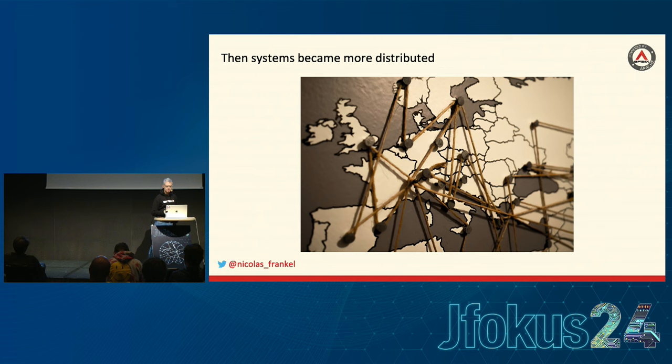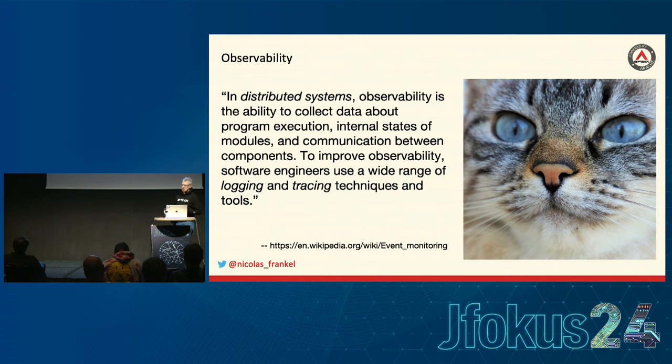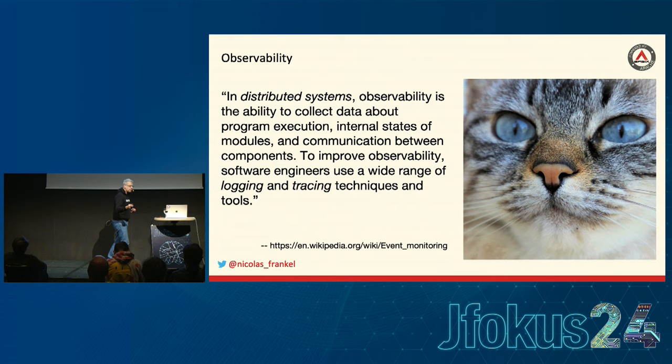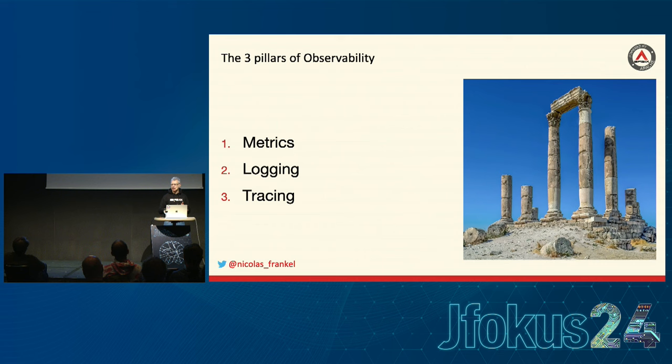Nowadays, a large majority of our systems are distributed. Even if you have a single app and a database, you can see it's the beginning of a distributed system. So even if you have a monolith, you can say you're doing distributed systems. For this, we invented another word: observability. I'll let you read the definition because I've been told you should never read out your slides, and I'm super lazy.